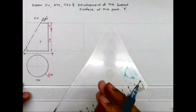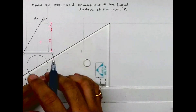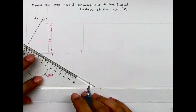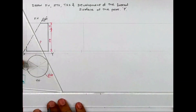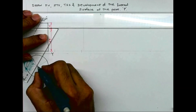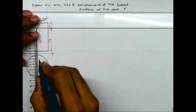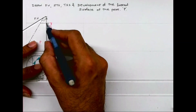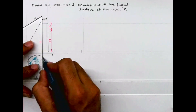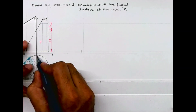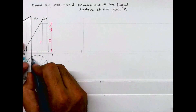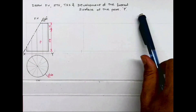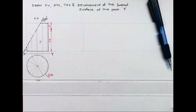This is the front view and top view. First we will divide this circle into 12 parts because the diameter is 16. We'll divide this into 12 parts and project all these lines. There are no edges, so we need to divide this into 8 or 12 parts. We have divided into 12 parts because the diameter is more than 5.